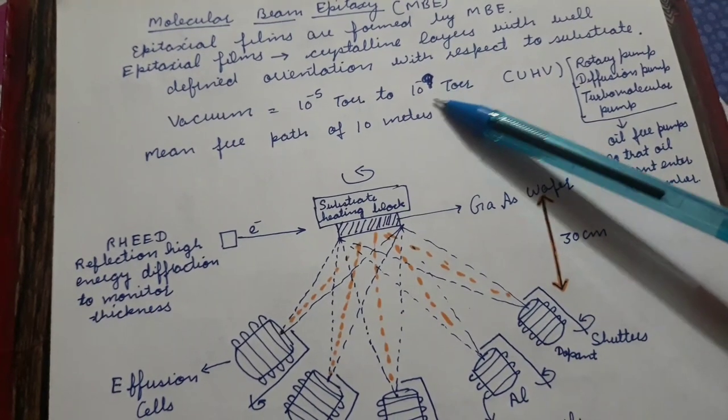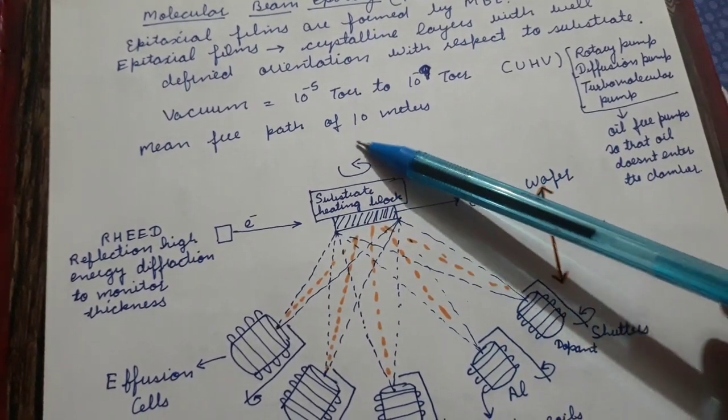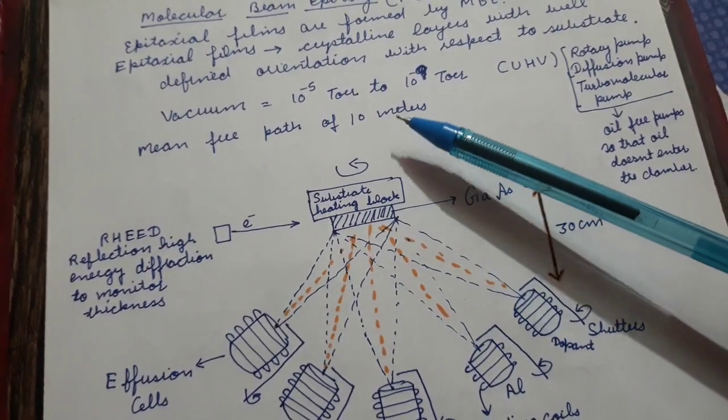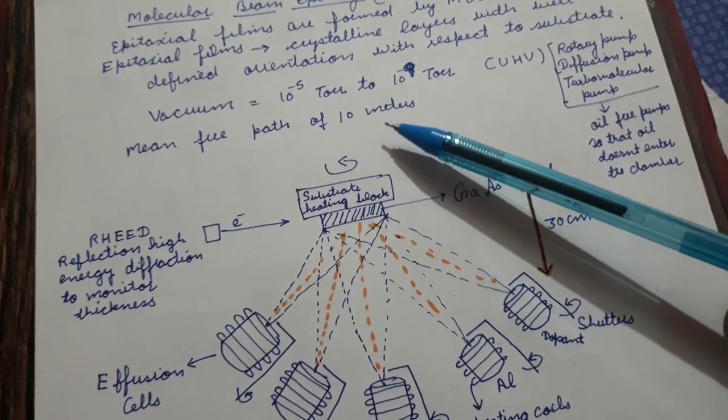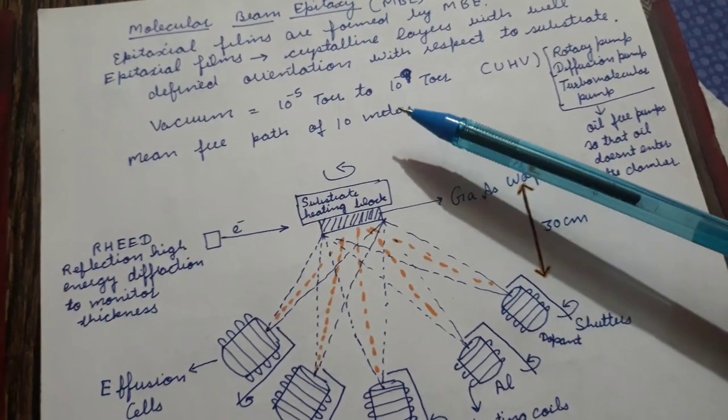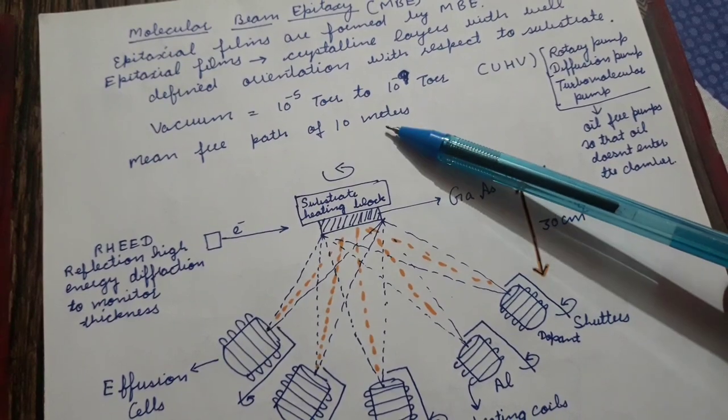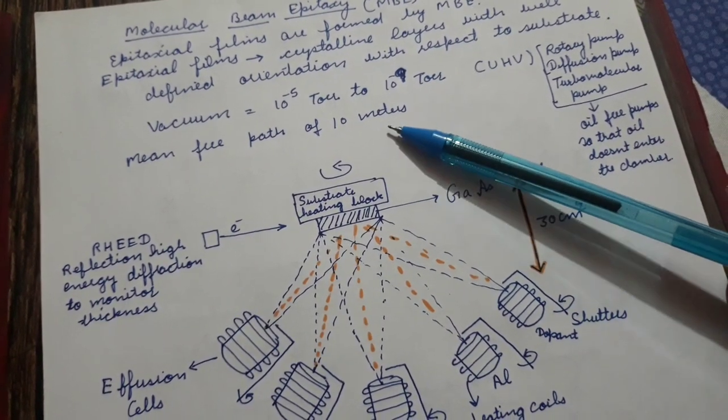At such very high vacuum, the mean free path will be about 10 meters. It means the atoms can travel about 10 meters without colliding with the ambient atmosphere.